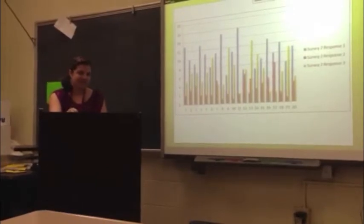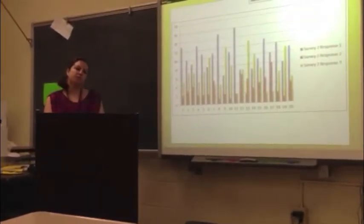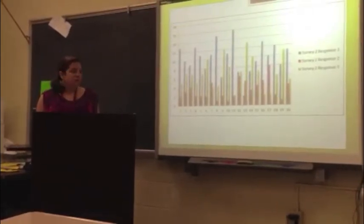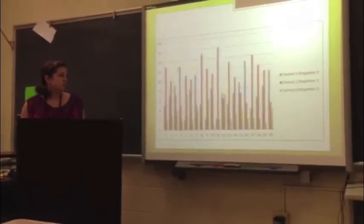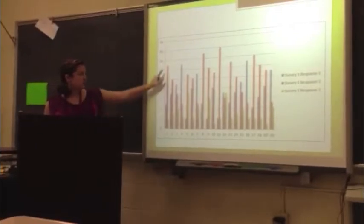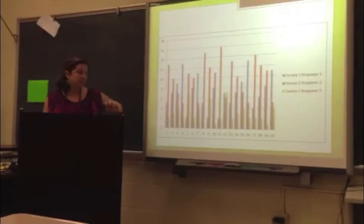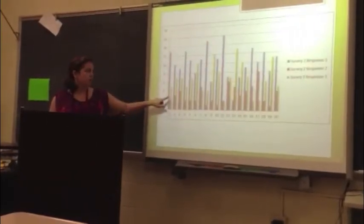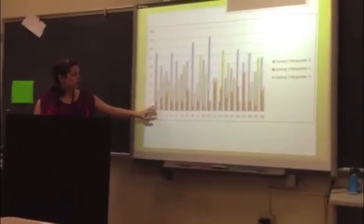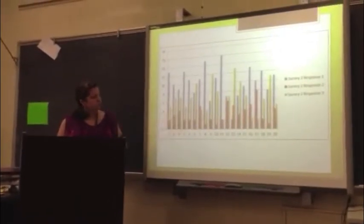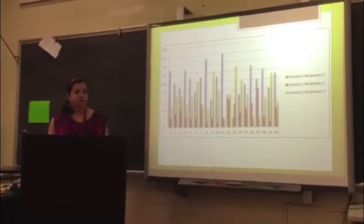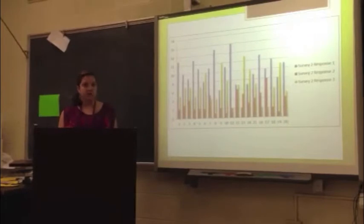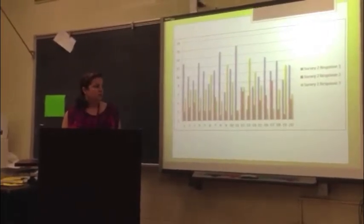During Q&A, a clarifying question was asked: the first graph was for facilitated instruction, and the second graph was for direct instruction. Looking at the facilitated instruction graph, the red bars representing response two — sometimes agree — were chosen overwhelmingly across the 20 questions. Whereas after the direct instruction lesson, responses one and three were chosen much more over two. This clearly indicates students had a better understanding of their own moral code — whereas before, they were very much in the middle, responding that it sometimes agrees, sometimes it doesn't.